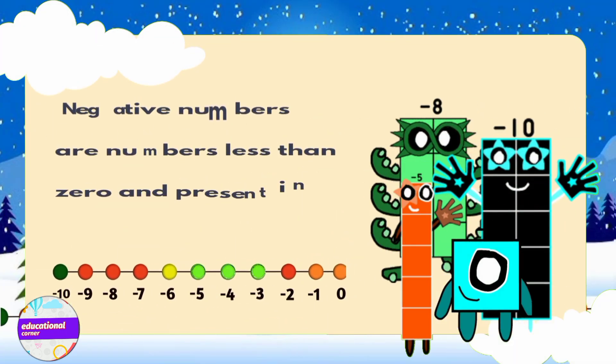Negative numbers are the numbers less than zero and present on the left side of the zero.